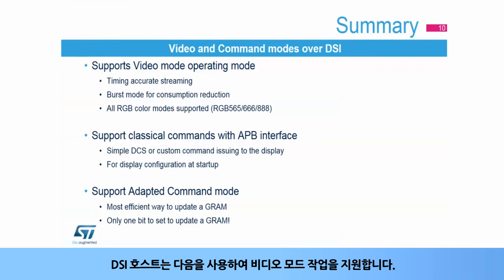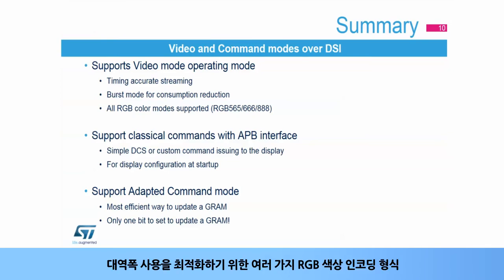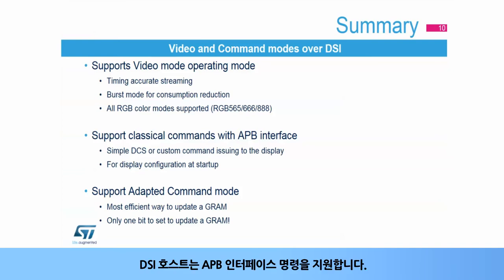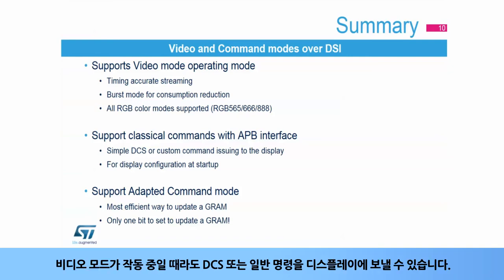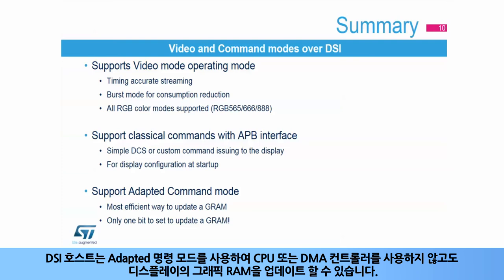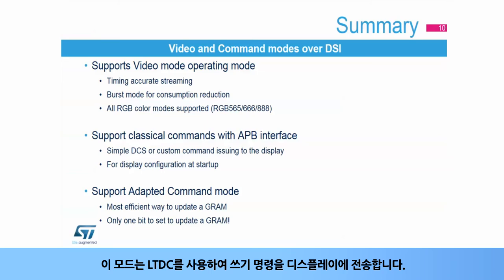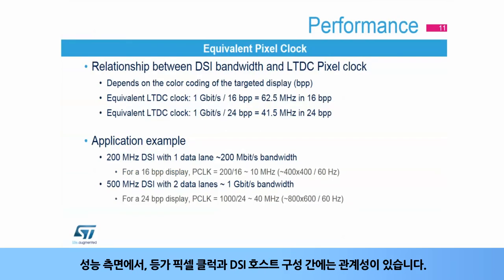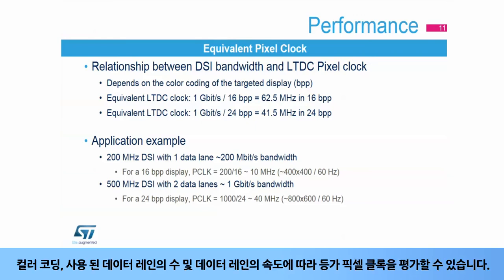The DSI host supports video mode operation with timing-accurate streaming, burst mode to reduce consumption during blanking periods, and several RGB color encoding formats to optimize bandwidth usage. It also supports commands through its APB interface; DCS or generic commands can be issued to the display even when video mode is working, for display configuration at startup and maintenance operations. The DSI host can also use adapted command mode to update a display's graphics RAM without using the CPU or DMA controller, working via the LTDC to transmit write commands to the display. In terms of performance, there is a relationship between the equivalent pixel clock and the DSI host configuration — depending on the color coding, the number of data lanes used, and the speed of the data lanes.